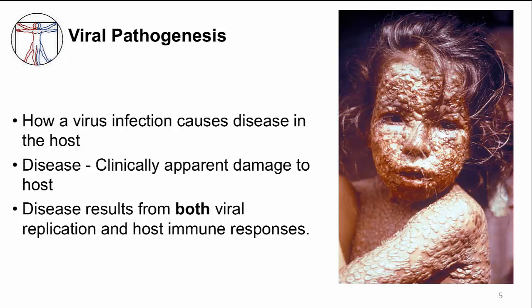You can see this in the picture here. This is a little girl with smallpox, and she has these characteristic poxes on her skin — lots of them. And this is a result of both the smallpox replicating and her immune response to the virus.